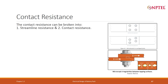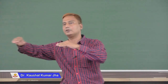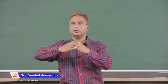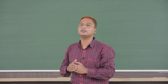Contact resistance plays a very important role. It can be divided into two parts: streamline resistance and contact resistance. Both are types of contact resistance. Streamline resistance occurs because current flow lines are distorted when flowing through an overlapped surface. When current flows from one surface to another, it has to jump across, creating a resistance we call streamline resistance.